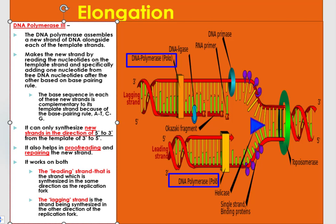We can remember that adenine always pairs with thymine and cytosine always pairs with guanine. This enzyme can only synthesize new strands in the direction of 5' to 3' from the template of 3' to 5'. It also involves proofreading and repairing processes if there is a mistake in binding a nucleotide. It works on both the leading strand and the lagging strand.